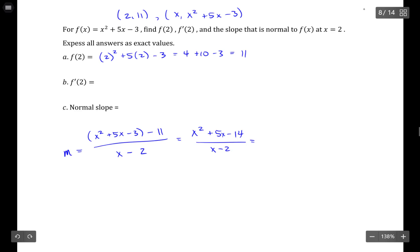Now if you simplify this, you can do it by factoring, because if you plug in 2, you get 0 over 0. So this would be 4 plus 5 times 2, so 4 plus 10 is 14, minus 14 is 0, and of course 2 minus 2 is 0 in the denominator.